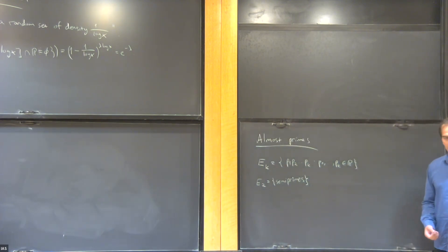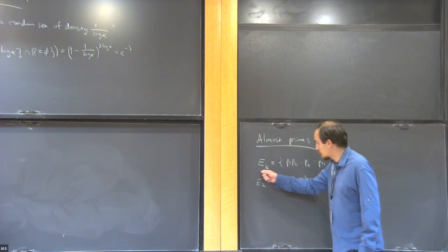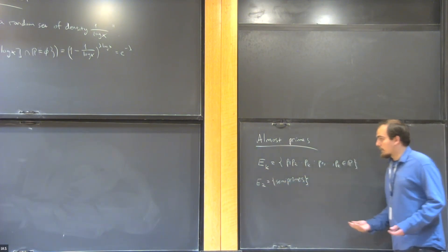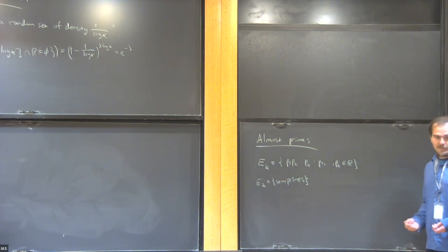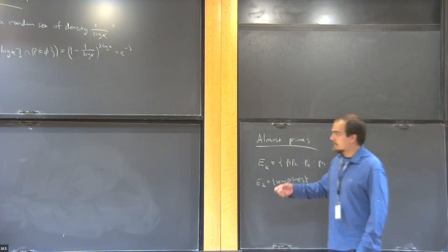Another reason is that similar obstructions or difficulties come up when trying to study these numbers in short intervals. In particular, the zeros of the Riemann zeta function play a role, as we saw with the primes.